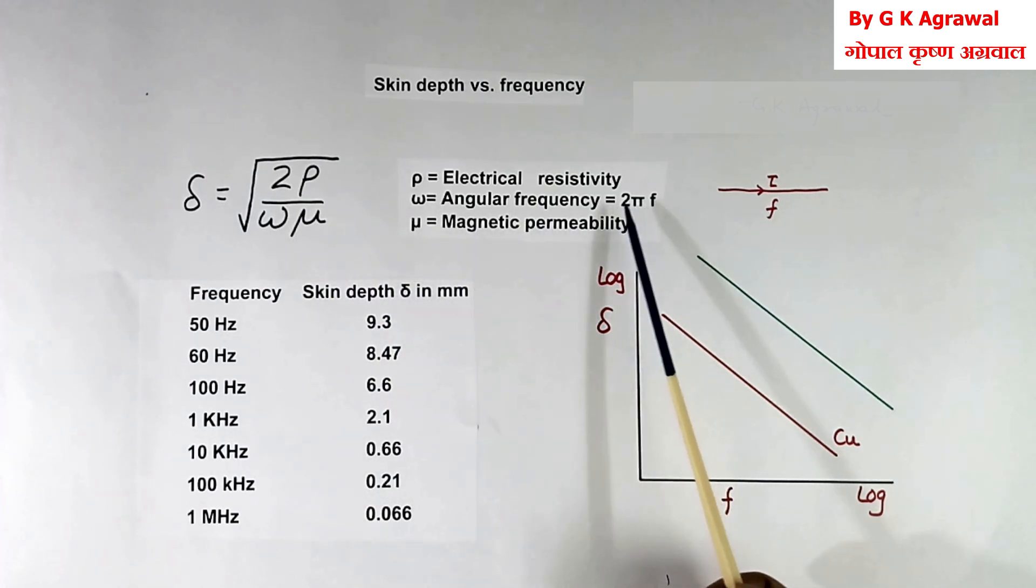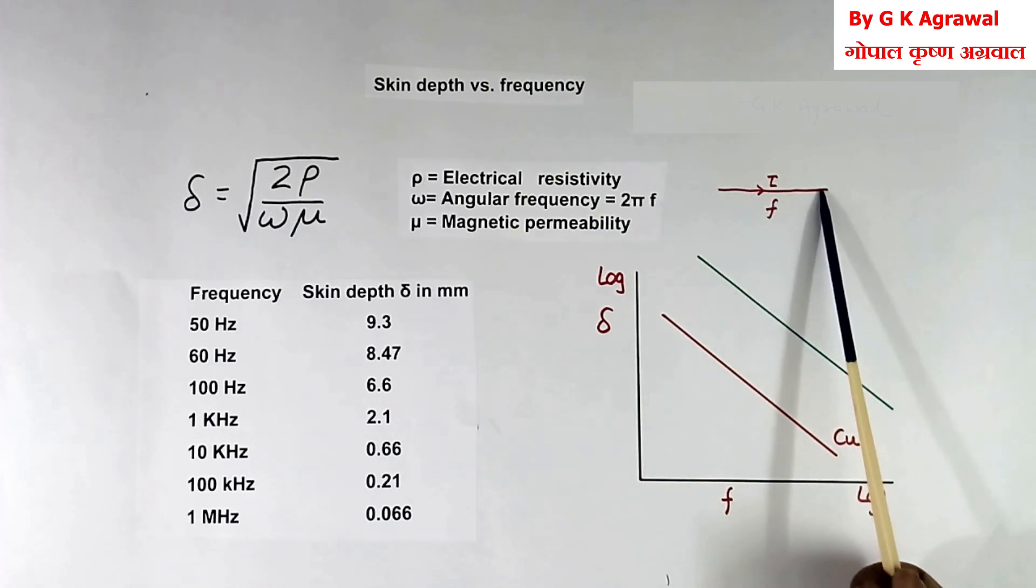And omega is equal to 2 pi F. F is the frequency of current flowing in this.